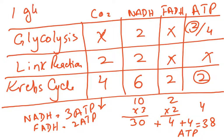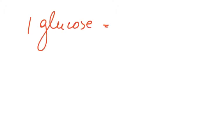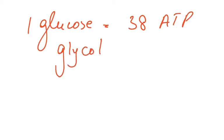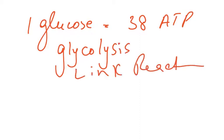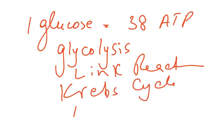One glucose at the end gives 38 ATP molecules. This involves all four processes: number one glycolysis, number two the link reaction, number three the Krebs cycle, and number four the electron transport chain (ETC), which is also called oxidative phosphorylation.